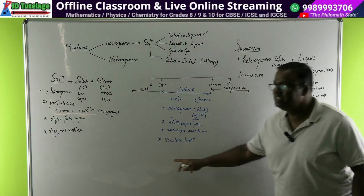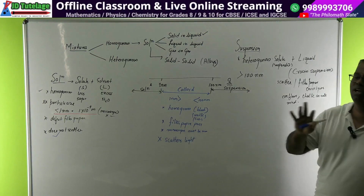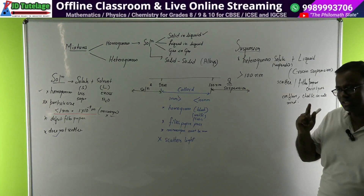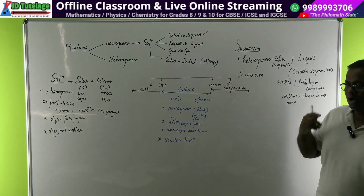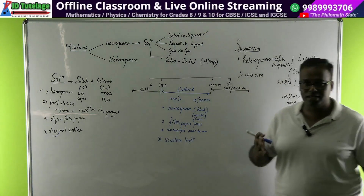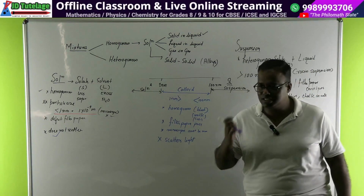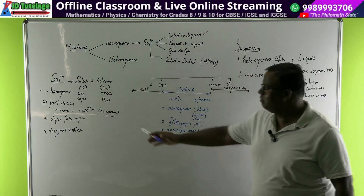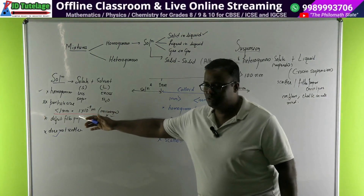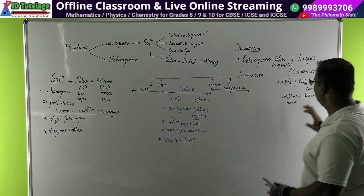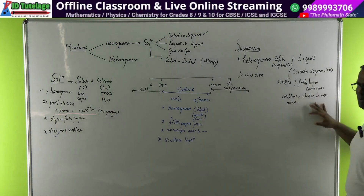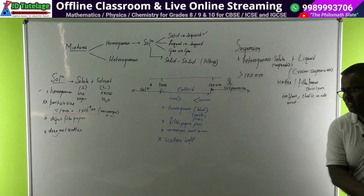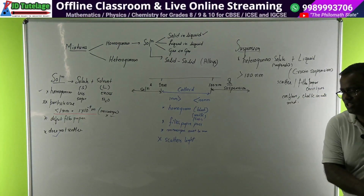That's why they teach scattering of light in so much detail - now you connect everything. Scattering of light is such a rambaan that with it you can distinguish between a solution and a colloid. Solution ko toh dekhne ki zarurat nahi hai - yeh pehle scatter kar dega. Achha, suspension bhi scatter karega.